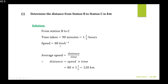The speed is 80 kilometers per hour. Using the formula distance = speed × time: distance = 80 × 1.5 = 120 kilometers. So the distance from station B to station C is 120 kilometers.